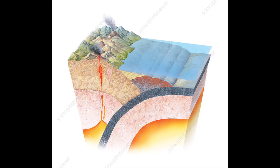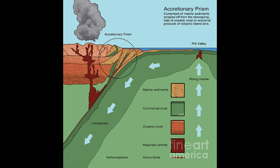Along convergent plate margins, one tectonic plate is typically pushed or subducted beneath another plate along deep oceanic trenches. In most cases a dense oceanic plate is subducted beneath a less dense, overriding continental plate, and a chain of volcanoes known as a volcanic arc forms on the overriding plate.